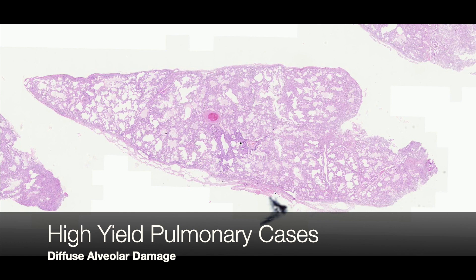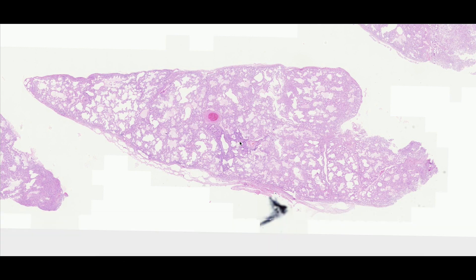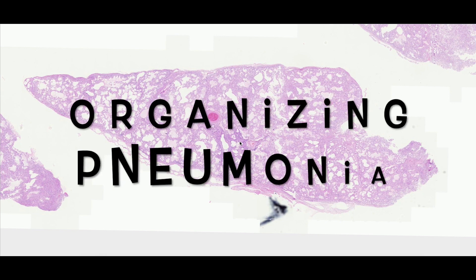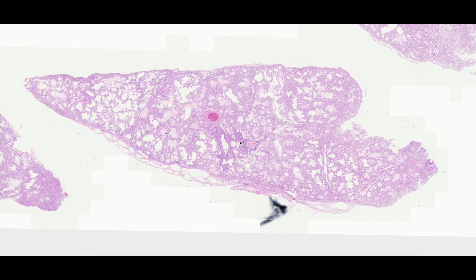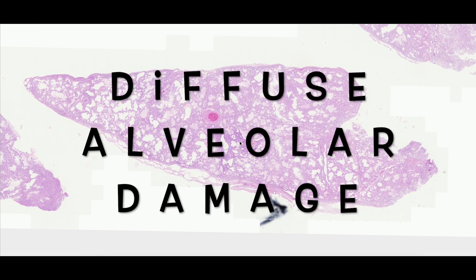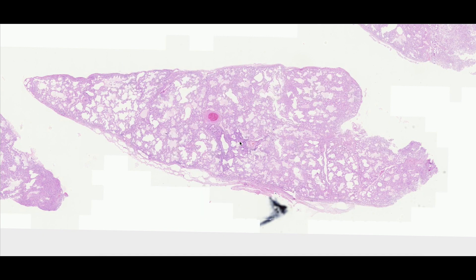The lung has a limited way in which it can respond to an injurious process, and typically this falls along a spectrum of acute lung injury that ranges from organizing pneumonia at one end to diffuse alveolar damage at the other end of the spectrum. Patients with diffuse alveolar damage, or DAD, typically have acute hypoxic respiratory failure and are often admitted to the ICU and require ventilator support.